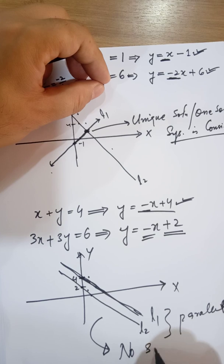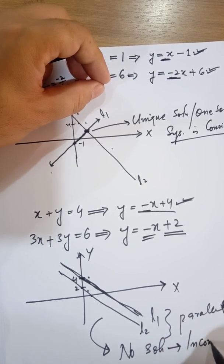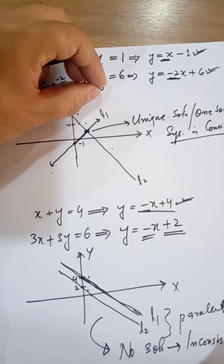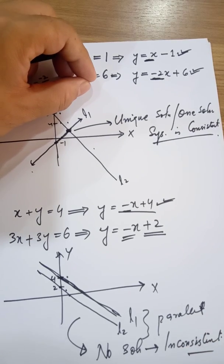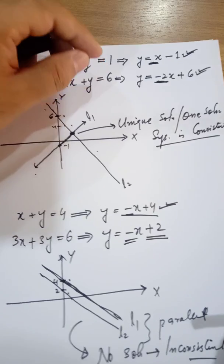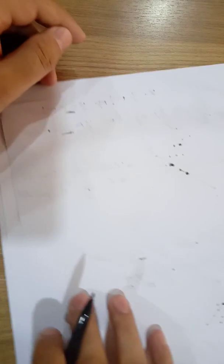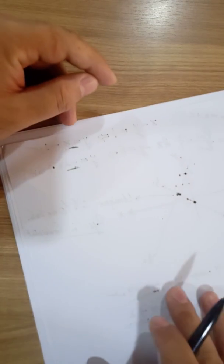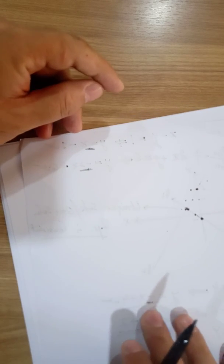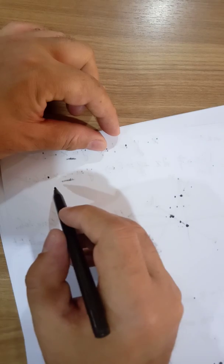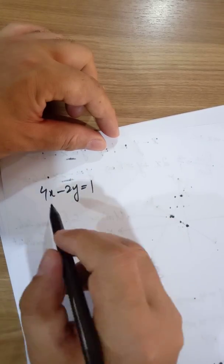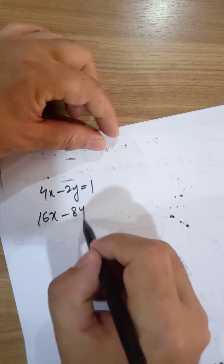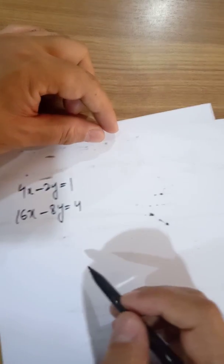Since both lines are parallel, they will not intersect at any point — there is no common point, meaning there is no solution. Therefore this system is inconsistent. Now let's take one example for the case of many solutions, where the system is consistent but has infinitely many solutions. Consider: 4x − 2y = 1 and 16x − 8y = 4.